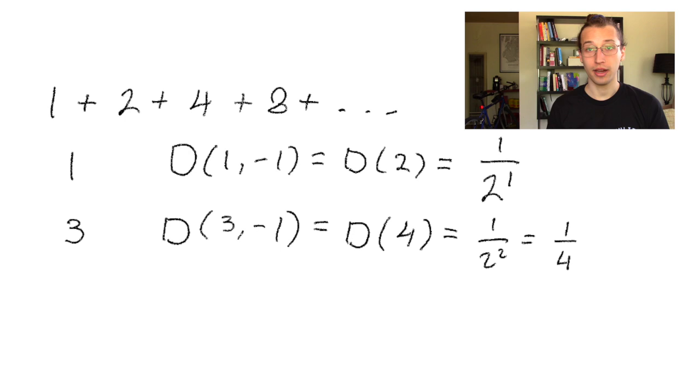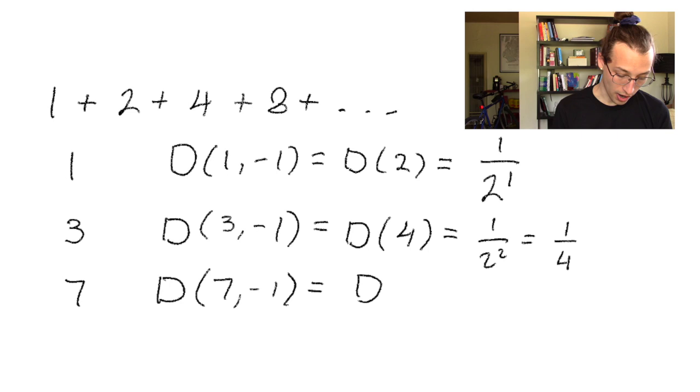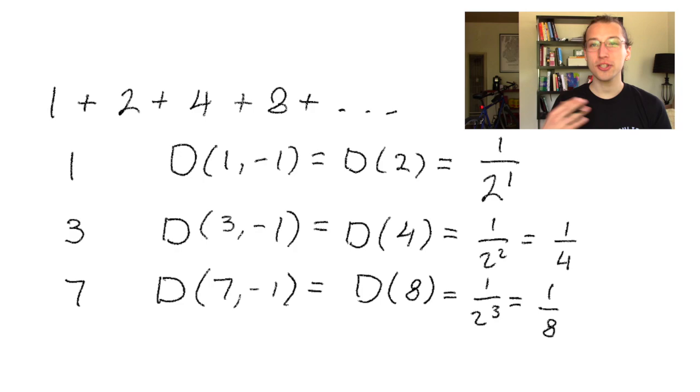The distance from 7 to negative 1, using the 2-adic metric, is the 2-adic size of 8, and 2 goes into 8 three times, so this is just 1 over 2 cubed, which equals an eighth. Clearly, each of these truncated sums is approaching negative 1, because all of our truncated sums are getting closer and closer to negative 1.